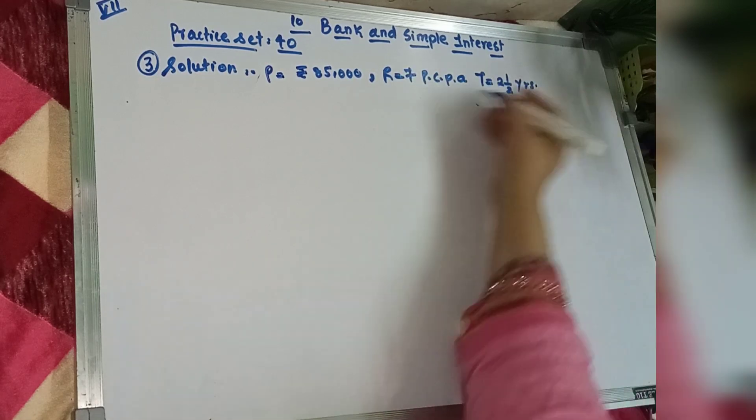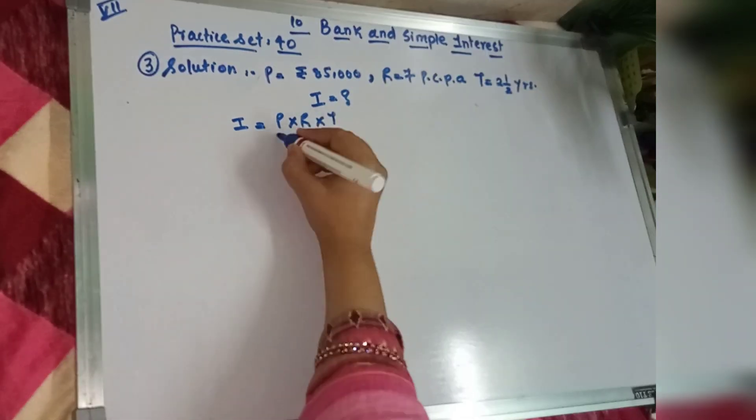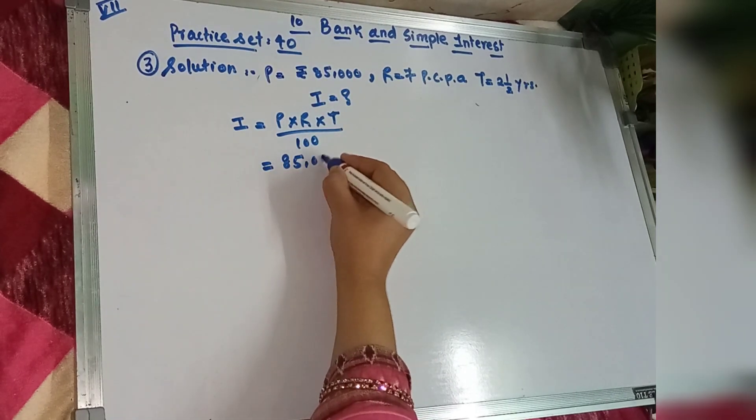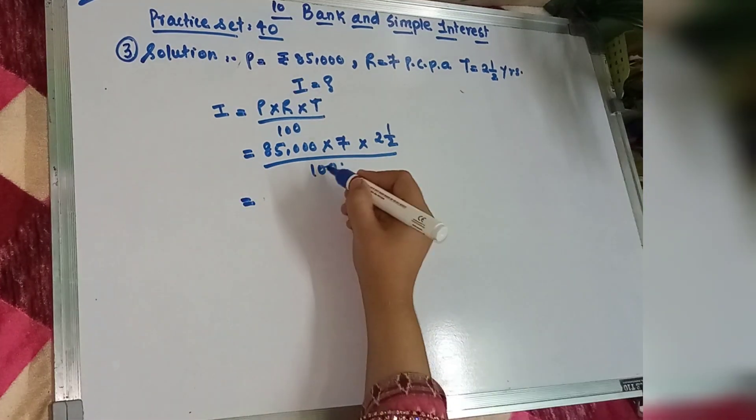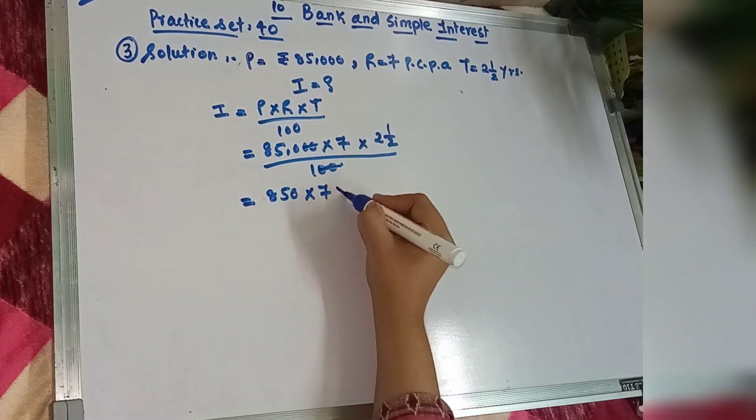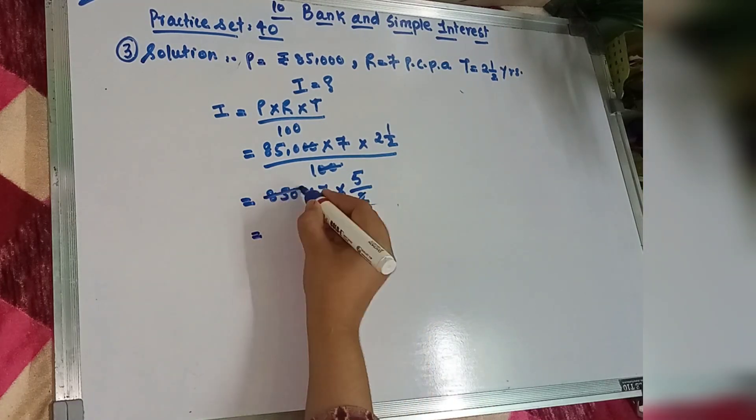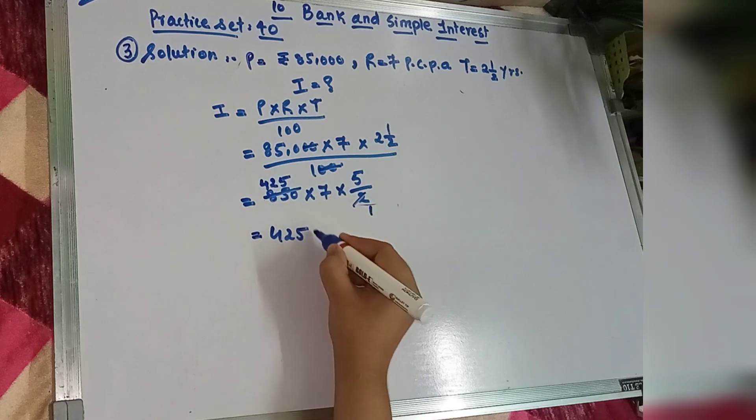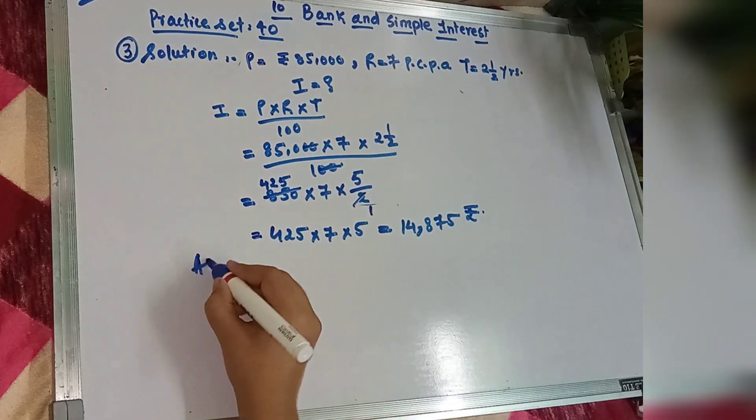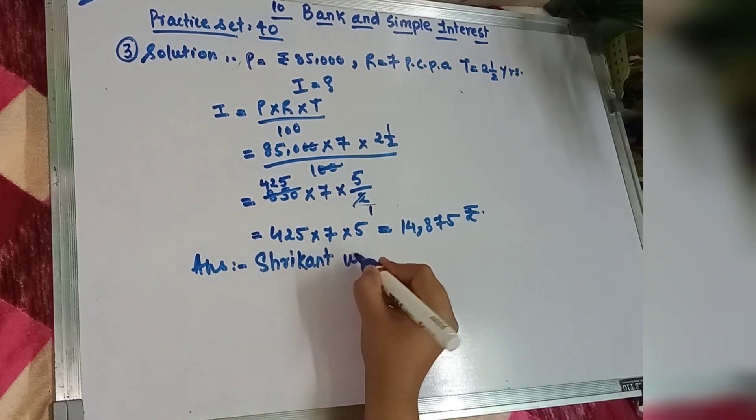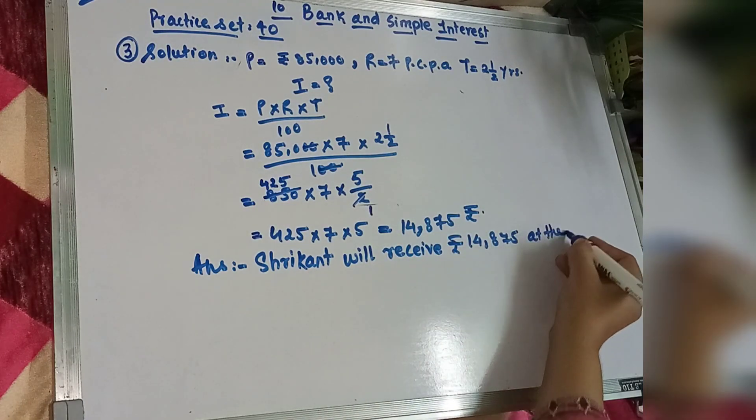First hum interest ka formula daal kar isko solve karenge. I is equal to PRT upon 100. Principal hai yaha par 85,000 into rate humara 7 or year hai 2 and a half years. Isko hum divide karenge. Iska answer aayega 14,875. Shrikant will receive Rs. 14,875 at the end of the period.